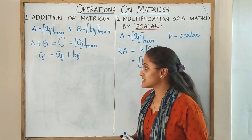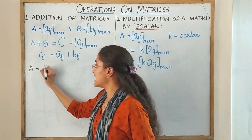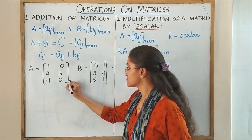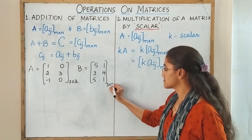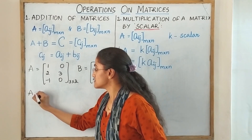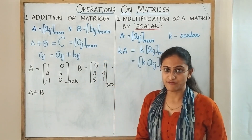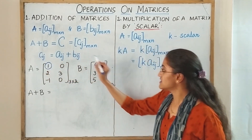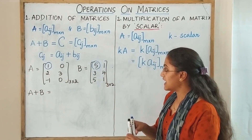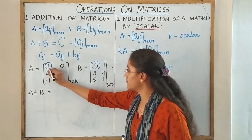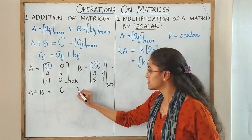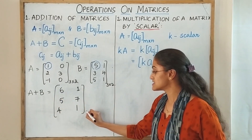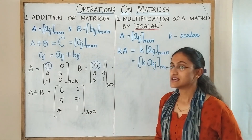Let us take a small example. If A and B are given matrices, then for the addition of A and B, we take the first element of A and the corresponding element of B, and find their sum. For example, 1 plus 5 gives you 6. Continue the same for all elements, and the resultant matrix retains the same order — 3 cross 2. This is the sum of the two matrices A and B.